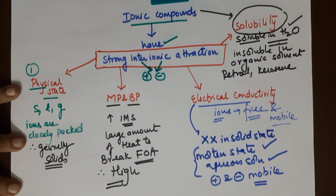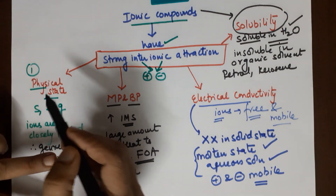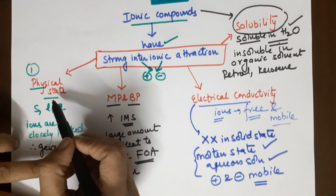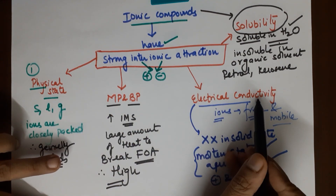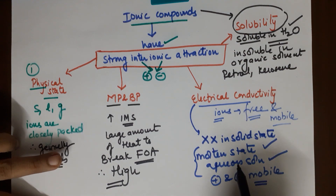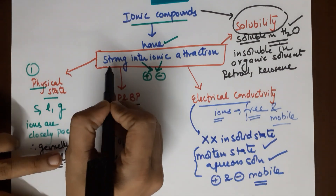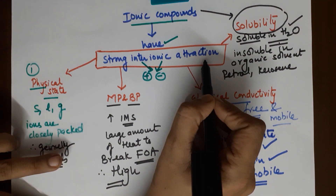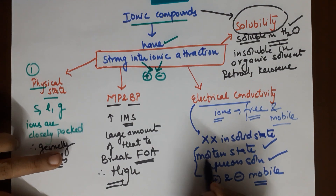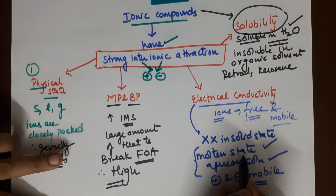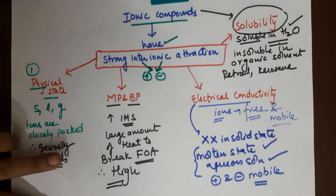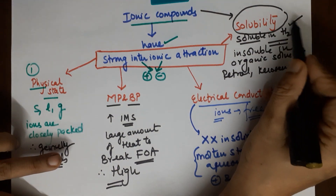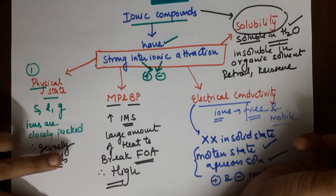To summarize the main important properties: physical state — ionic compounds are generally solids; melting and boiling points are high because of the strong force of attraction; electrical conductivity is difficult in the solid state because ions are tightly packed — you need to heat it so the ions become mobile and can conduct electricity; solubility is related to water, which is a polar solvent, and in water ionic compounds are soluble.